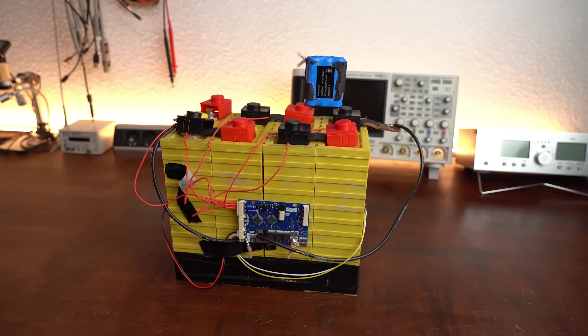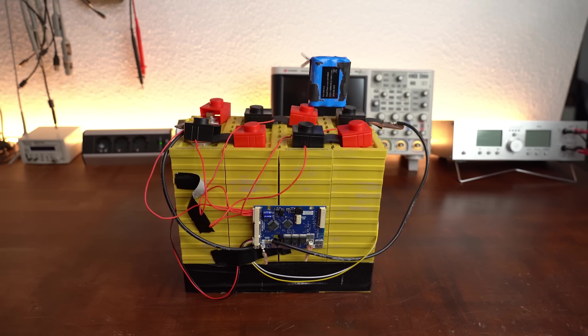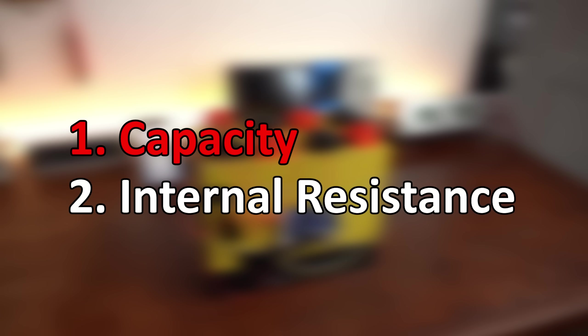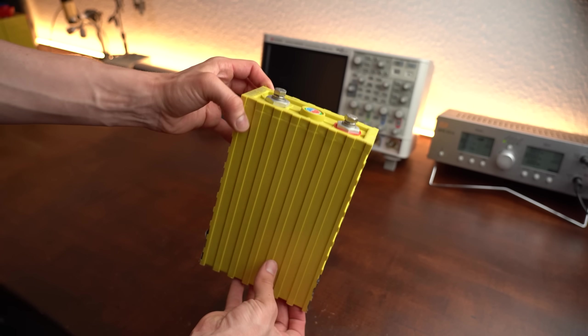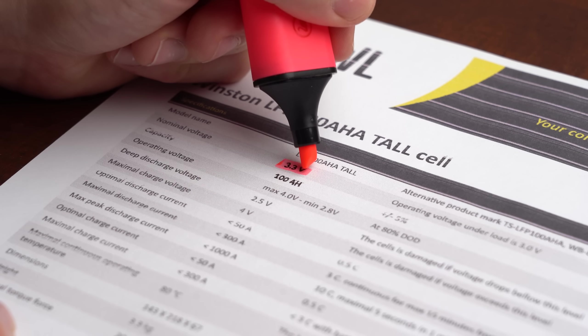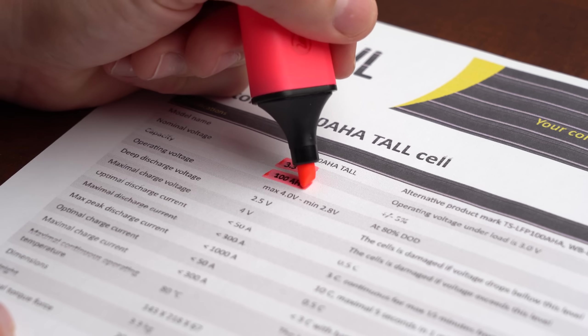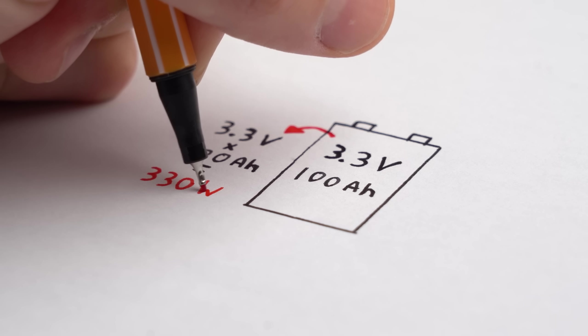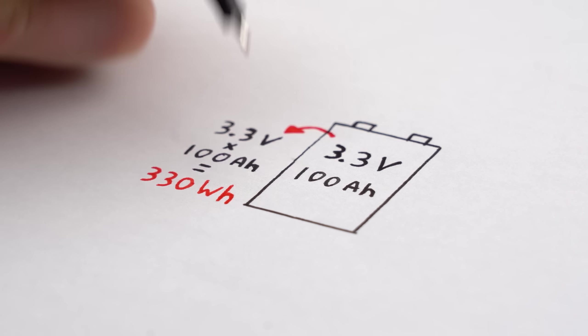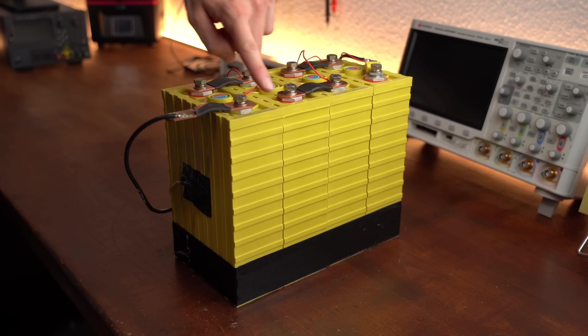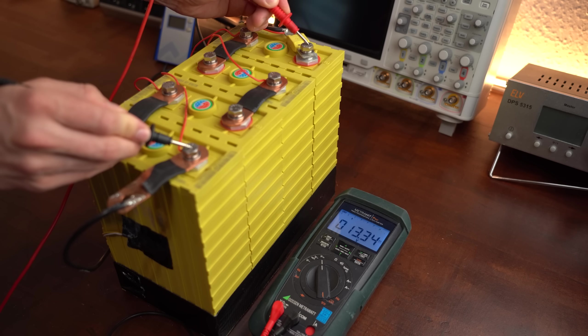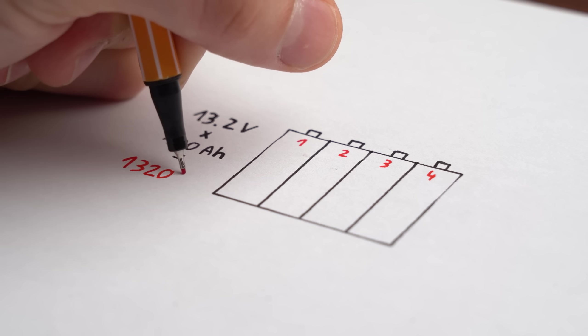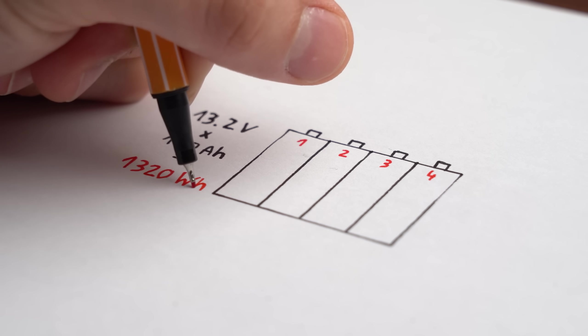Now there are two properties of a battery that give away whether it is still usable and that is its capacity and internal resistance. First off, the capacity is pretty self explanatory. For example, one of my battery cells comes with a nominal voltage of 3.3V and a capacity of 100Ah. That means after charging it up with its advised charging voltage, we got around 330Wh of energy stored inside it. And since I got 4 of them in series the voltage multiplies by 4 so around 13.2V with still a capacity of 100Ah which means we got a total energy capacity of 1320Wh.